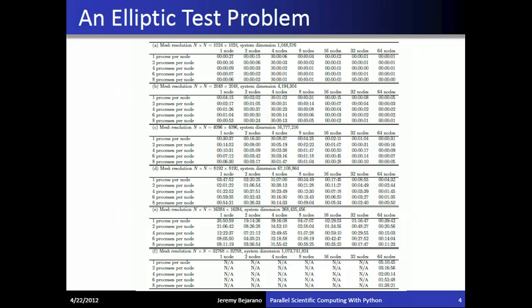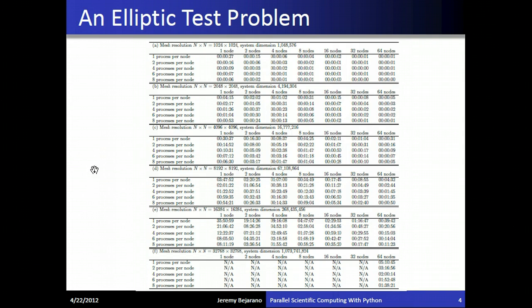MPI is a standard for distributed memory programming. This table comes from a paper by the University of Maryland Baltimore County. It's a speed-up table for an elliptic test problem — specifically solving the Poisson equation. Here we see the speed-ups that we can achieve with parallel programming. This partial differential equation is solved on a mesh of about 1,000 by 1,000.